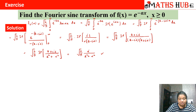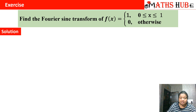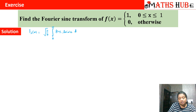Now let us move to the next question: find the Fourier sine transform of f(x) = 1 on the interval [0, 1] and 0 otherwise. We write Fs(α) = √(2/π) ∫₀^∞ f(x) sin(αx) dx, and we break the integral into two parts: from 0 to 1 and from 1 to ∞.